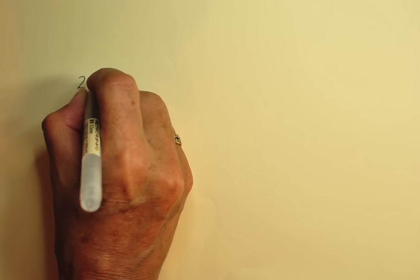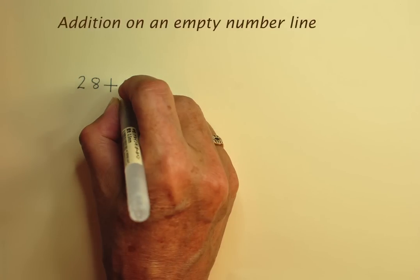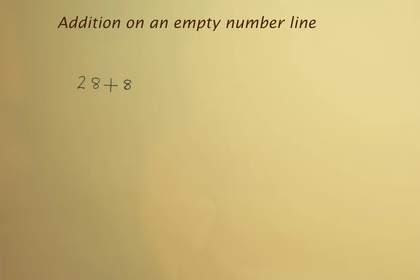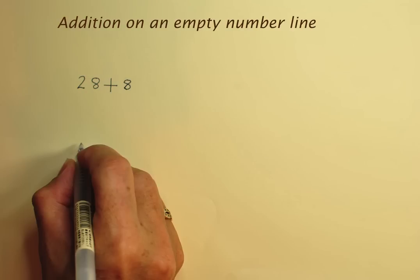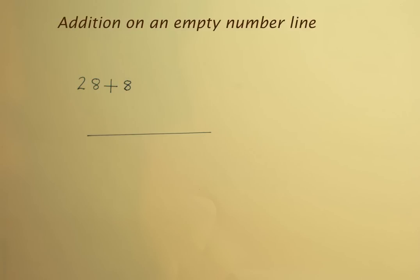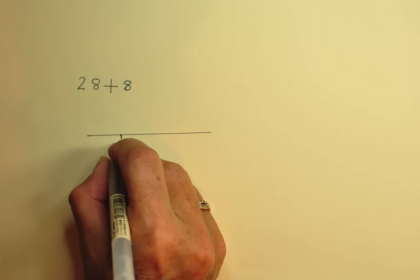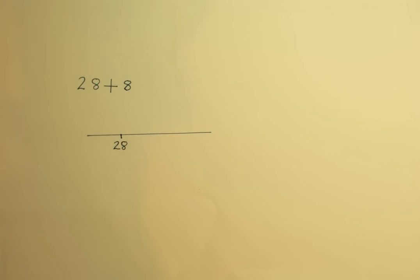Let's now start. I'll start with an addition, 28 plus 8. My empty number line is just that, a straight line and a blank line, no numbers on it. I'm going to put 28 on the line wherever I please, by marking a point on the line and labeling it below the line.